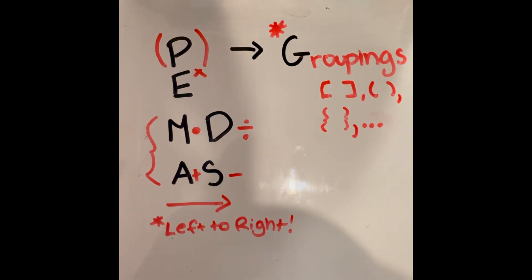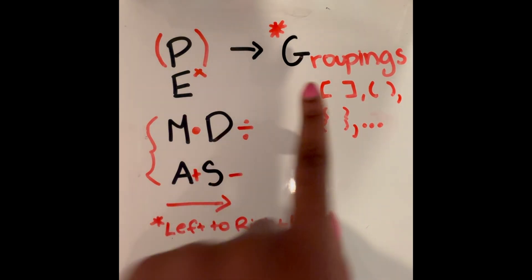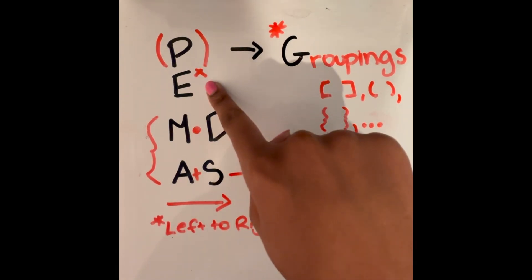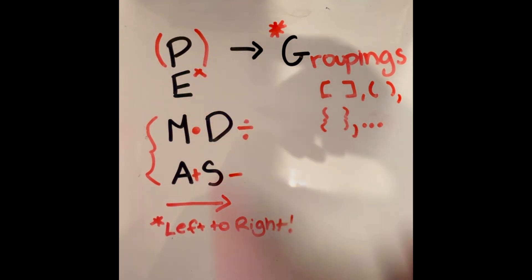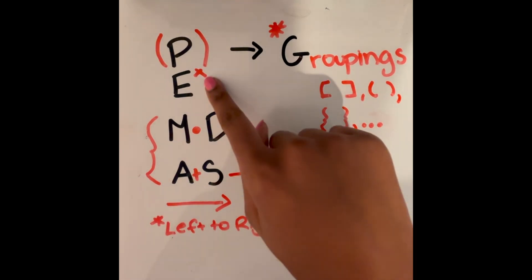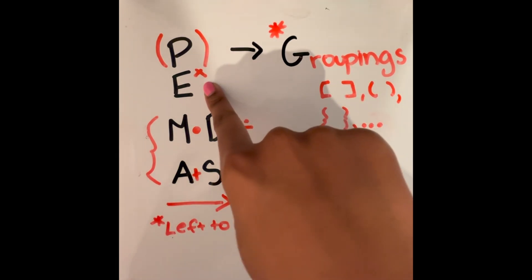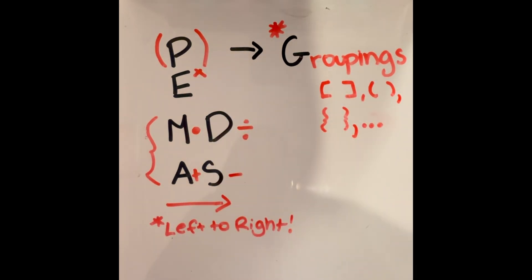Now, in some cases, you may see PEMDAS written with a G. The G stands for grouping. For exponents, I wrote in an X here to fill in as just a variable placeholder. So this X could represent any number exponent, whether that's a two, a three, a negative two, one half, whatever.